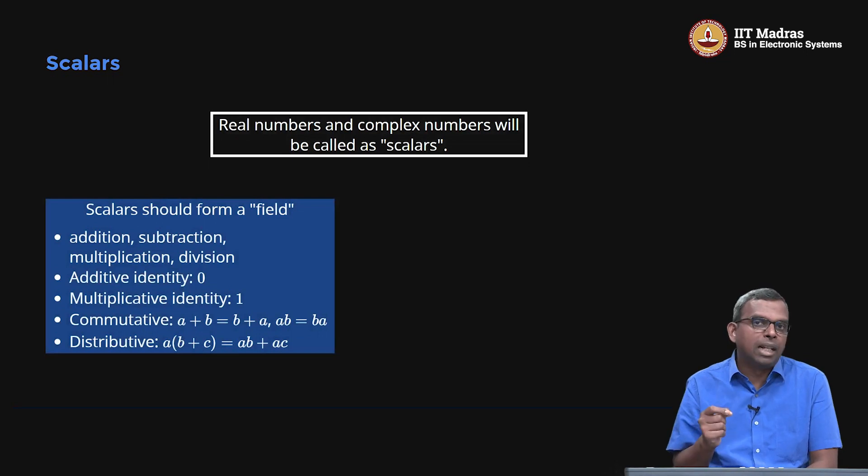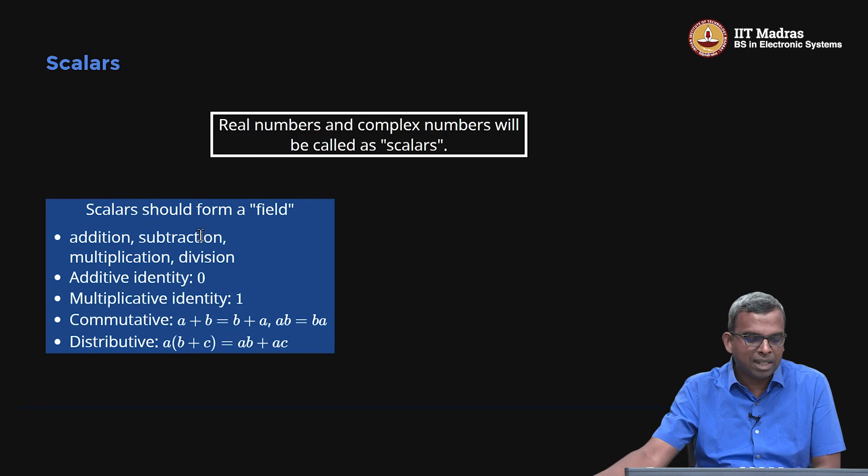Scalars should form a field when you want to do proper linear algebra. What is a field? You should be able to do addition, subtraction, multiplication, division. There are other criteria: you need an additive identity. Zero is powerful—you add any number to 0, you get the same number. That's additive identity. Similarly, there's multiplicative identity, which we denote 1. Any number you multiply by 1, you get that same number. Zero and 1 are important—every field should have 0 and 1.